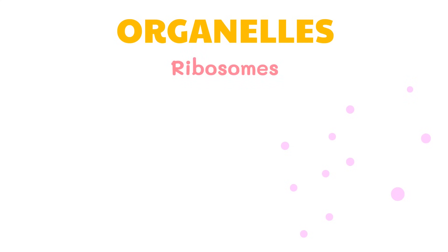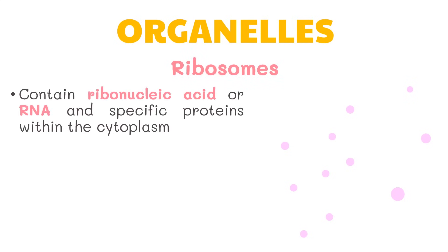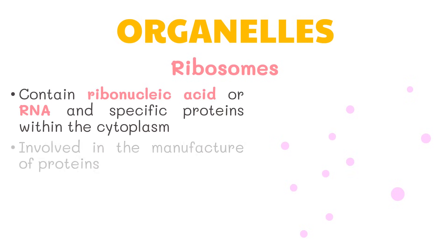Next we have the ribosomes. Ribosomes are tiny organelles, like dots, that contain ribonucleic acid, or RNA, and specific proteins within the cytoplasm. Within the cell, ribosomes are directly involved in the manufacture of proteins.